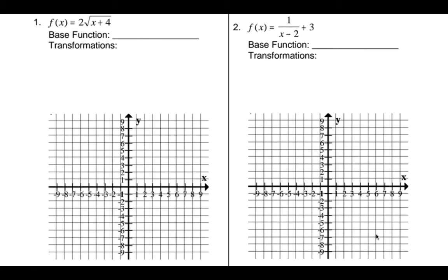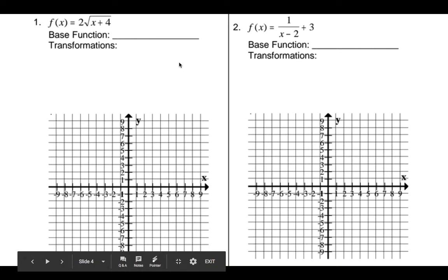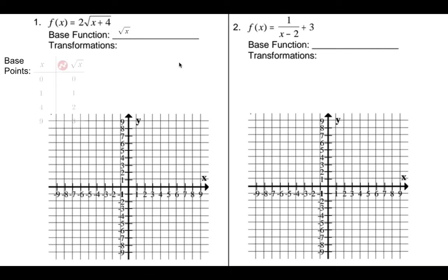We're going to learn about these by practicing. We'll start with the root x graph. The base function is the square root of x. The base points are (0,0), (1,1), (4,2), and (9,3) — those are just the square root of the x values. If we plot those points, you shouldn't be surprised to see that familiar shape.